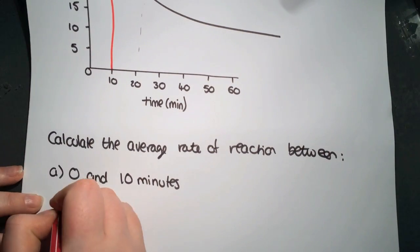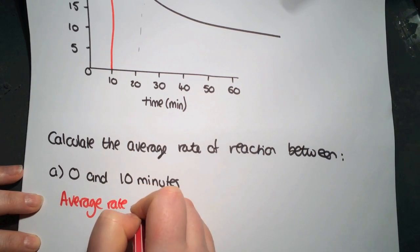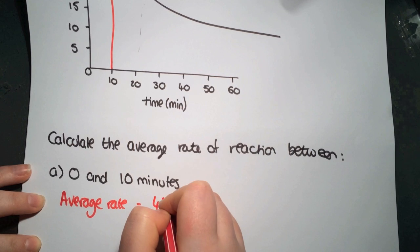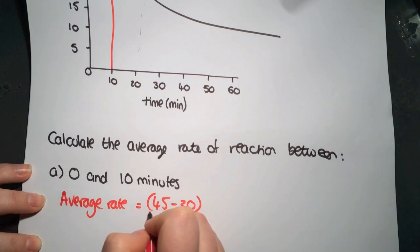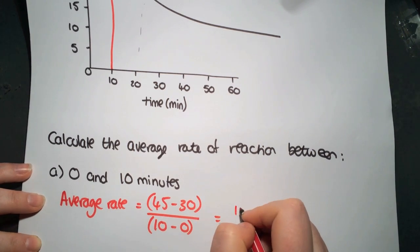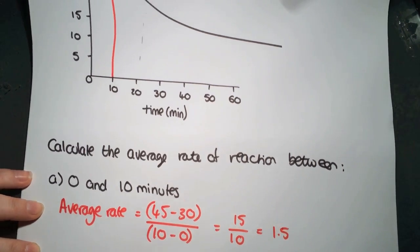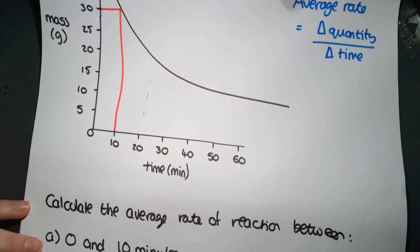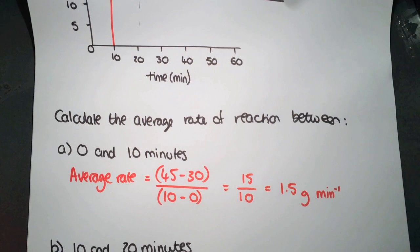So for our average rate calculation, we have 45 minus 30 for our quantity. And we have 10 minus 0 for the time. So that gives us 15 divided by 10, which equals 1.5. Back to the graph and have a look and check the units. So it's in grams as your quantity. And time is per minute.